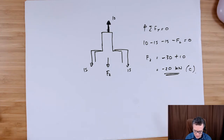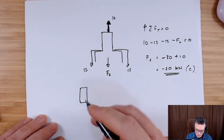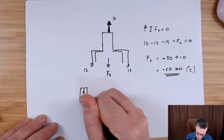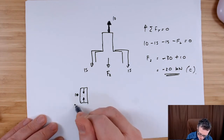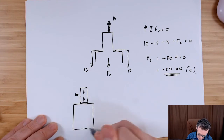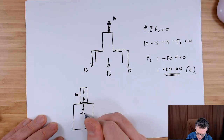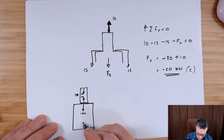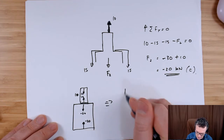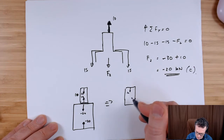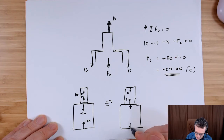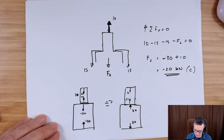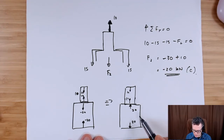Let's recap. Top section: we've got 10 pointing away and 10 pointing away — those are the internal forces in the top section. Bottom section: by definition I have to define things as pointing away, so they're negative, and that's with a value of 20. We can reorientate the arrows — the top section has 10 pointing away on each side and the bottom section we can flip the arrows. I don't always like to do this, but the internal forces are going that way.